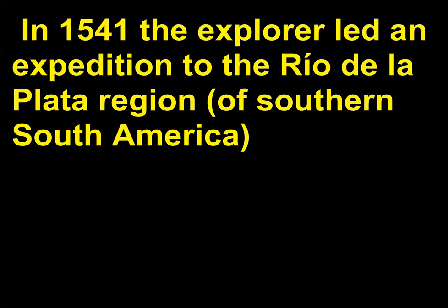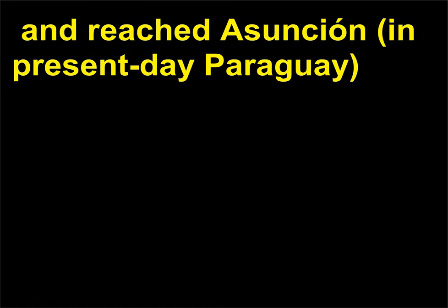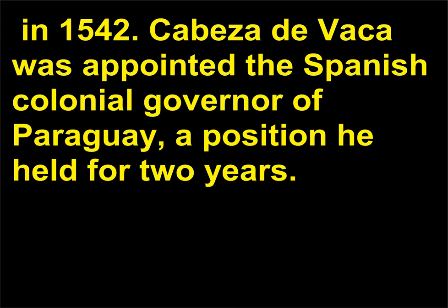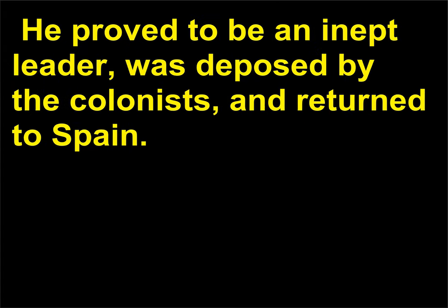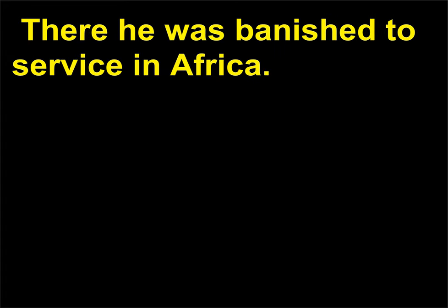In 1541 the explorer led an expedition to the Rio de la Plata region of southern South America and reached Asuncion, in present-day Paraguay. In 1542, Cabeza de Vaca was appointed the Spanish colonial governor of Paraguay, a position he held for two years. He proved to be an inept leader, was deposed by the colonists, and returned to Spain, where he was banished to service in Africa.